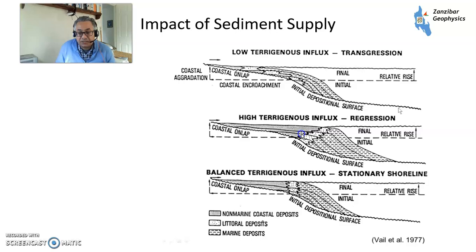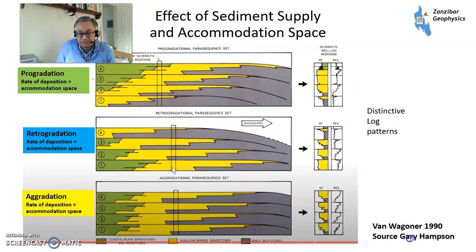Then you've got regression — high terrigenous influx — where loads of sediment is coming in faster than sea level is rising, so the shoreline moves basinward. And then low terrigenous influx is a transgression, where sea level is moving landward and the beach sands are moving that way. This is from Van Wagoner, via Gary Hampson — I really would recommend his sequence stratigraphy course; he's a lecturer at Imperial College and has most of that on YouTube.